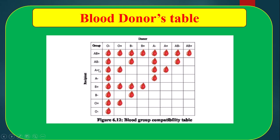Blood group A positive can receive from O positive, O negative, A negative, and A positive. Blood group A negative can receive from O negative and A negative only. Blood group B positive can receive from O negative, O positive, B negative, and B positive. Blood group B negative can receive from only O negative and B negative. O positive can receive from O negative and O positive. Blood group O negative can receive from only O negative.